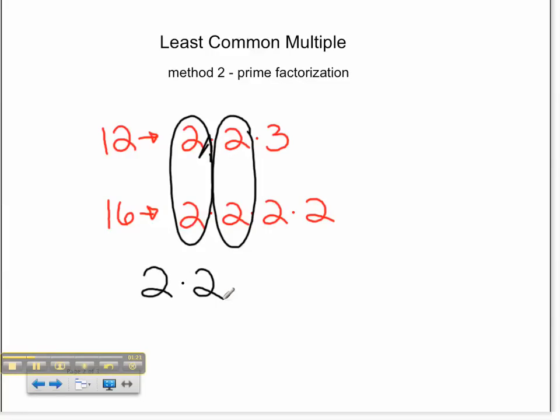And then we're going to take everything else that they don't have in common and multiply that into our mix also. So we have a 3, a 2, and another 2.